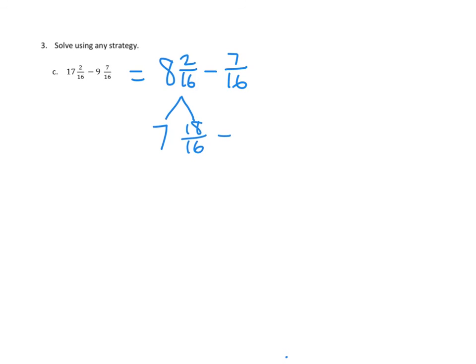And now we have to subtract 7 sixteenths. Well, that we can do. Now we have enough over here. We've got our 7 wholes, 7 ones. And we've got 18 sixteenths minus 7 sixteenths. And that is, oh, I noticed I missed a number here. Sorry. 18 sixteenths minus 7 sixteenths. That's 11 sixteenths.